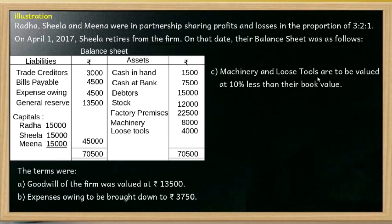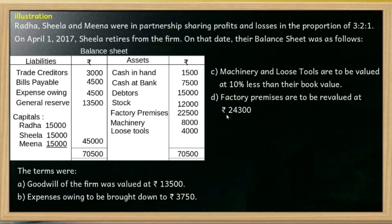The machinery and loose tools are to be valued at 10% less than their book value. The assets are revalued at 10% below book value. The revalued figure is not the same as the balance sheet book value.